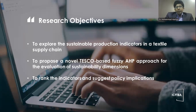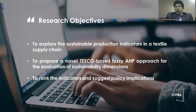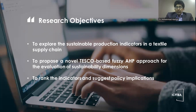There are three main objectives of this presentation. The first is to explore the sustainable production indicators in a textile supply chain. The second is to propose a novel TESCO-based FASI-EHP approach for the evaluation of sustainability dimensions. The third objective is to rank the indicators and suggest policy implications to the stakeholders.